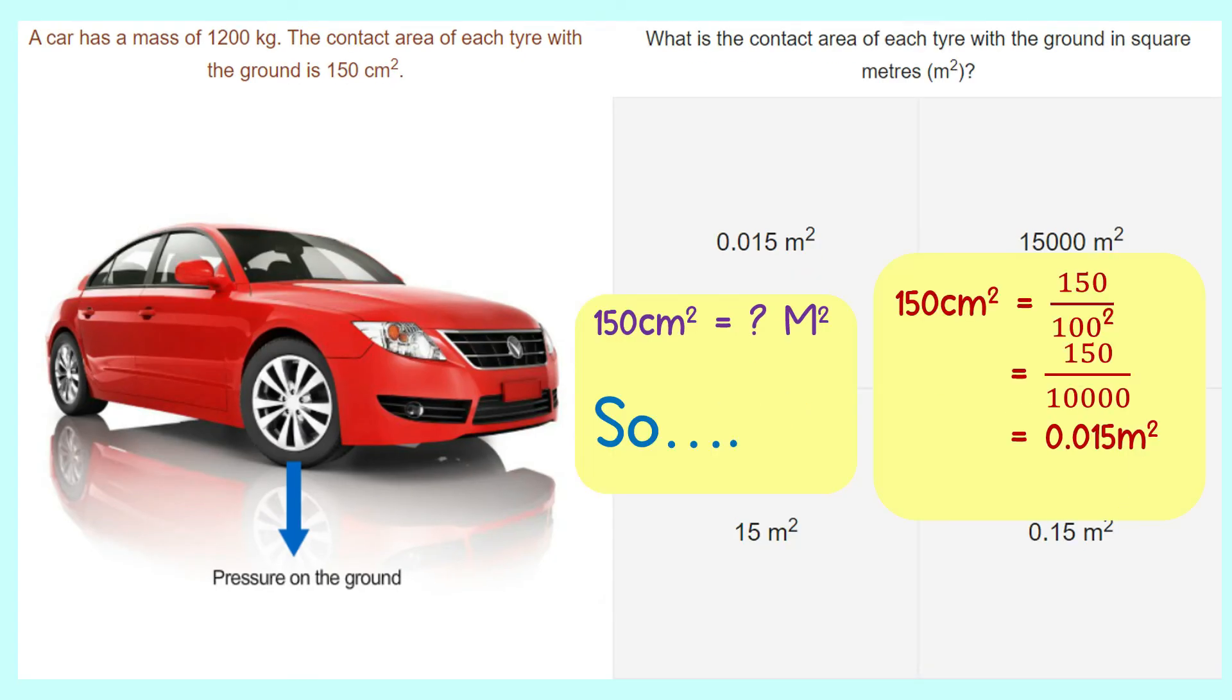The same question, but this one requires you to calculate the contact area of each tire with the ground in square meter. Please remind that the contact area of the tire is in centimeters square. So, how would you convert centimeters square to meters square? Like I said just now, you have to divide with 10,000. 150 divided with 10,000 is 0.015 meters square.